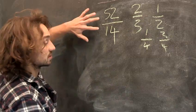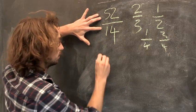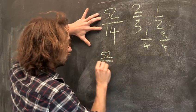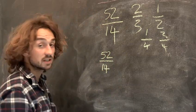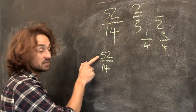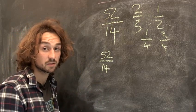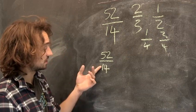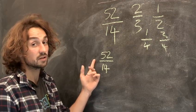So let's say I want to simplify this fraction, 52 over 14. Now what I need to do is look for a number that goes into 14 and goes into 52. Now it's always easiest to start with 2. I can see these are both even numbers, so 2 definitely goes into this one.